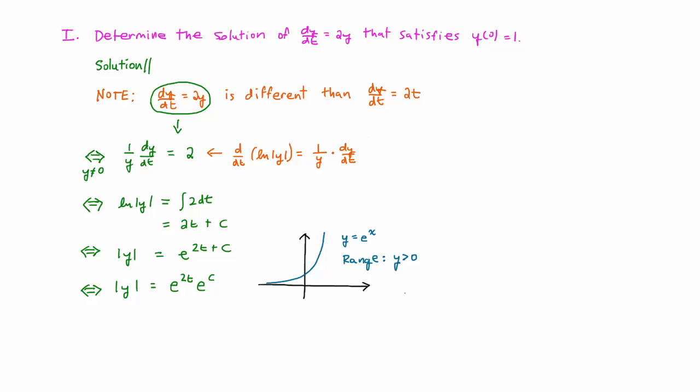Therefore, e to the c can be any positive real number, and we can replace it with an arbitrary positive constant, which we'll call c2.